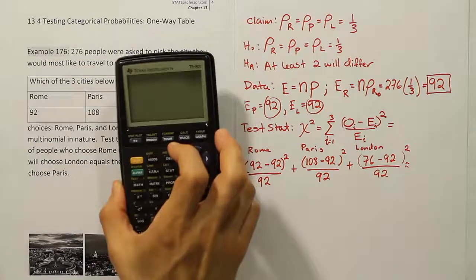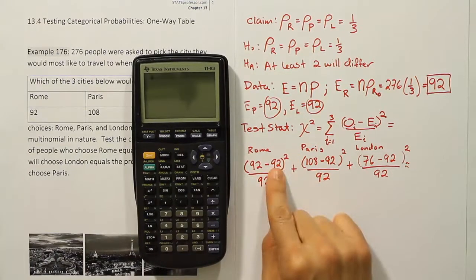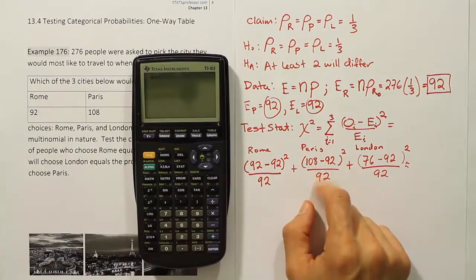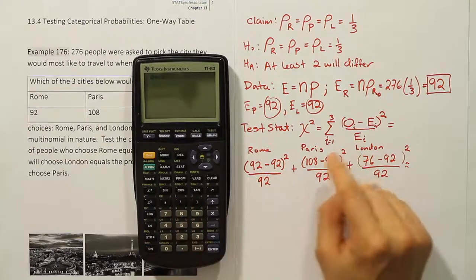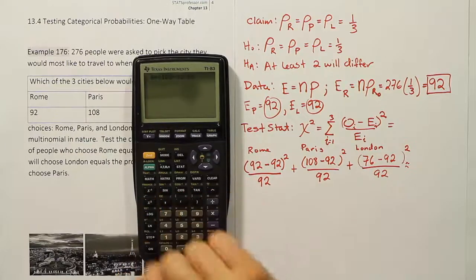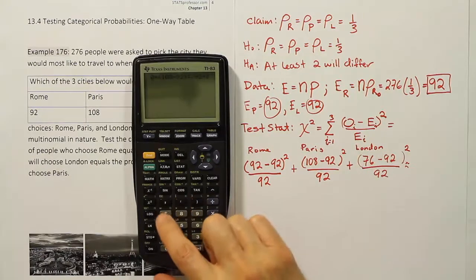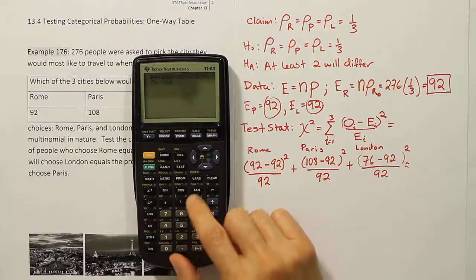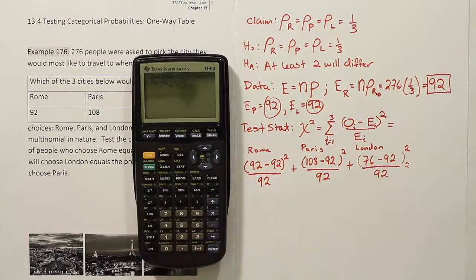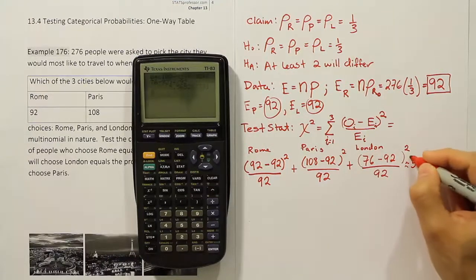The first fraction is 0 since 92 − 92 = 0. Then we add (108 − 92)² / 92, plus (76 − 92)² / 92. When you compute that, you get the answer 5.565. That is your test statistic.